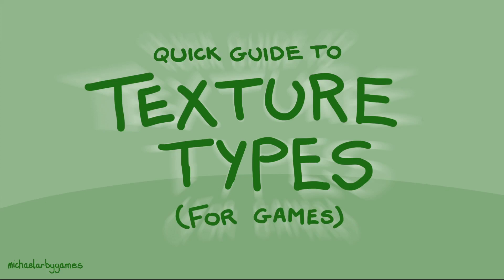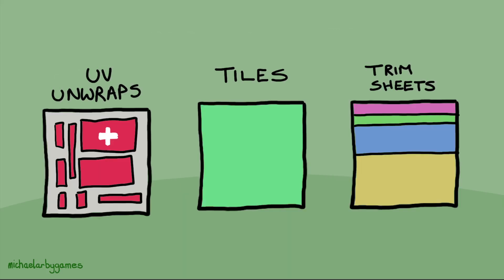Welcome to this quick video guide on texture types used in games. We're going to be focusing on stuff that is useful for 3D environments. We'll be covering three types of textures: UV unwraps, tiles, and trim sheets. Some of these you may be familiar with, some not, so let's start with the one you're most likely familiar with.